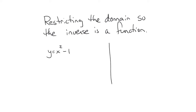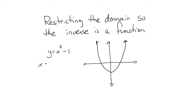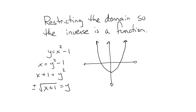First of all, let's take a look at the graph, because I want to have a visual sense of what's going on here. I'm going to graph x squared minus 1 — it's just a parabola that's been shifted down one unit. Now I'm going to find the inverse by swapping the x and the y, bring the 1 over, and take the square root. Something special happens: I get plus or minus square root of x plus 1.